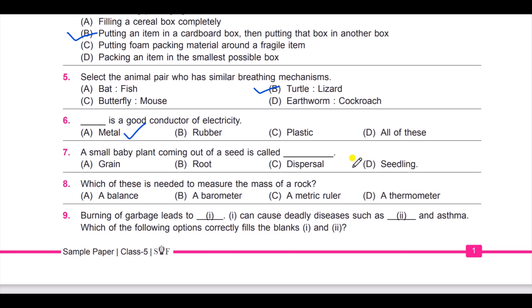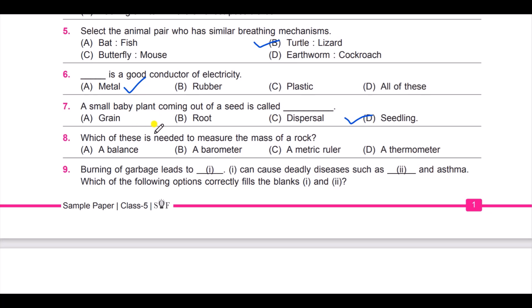Next: which of these is needed to measure the mass of a rock? A balance, a barometer, a metric ruler, or a thermometer. It is a balance.